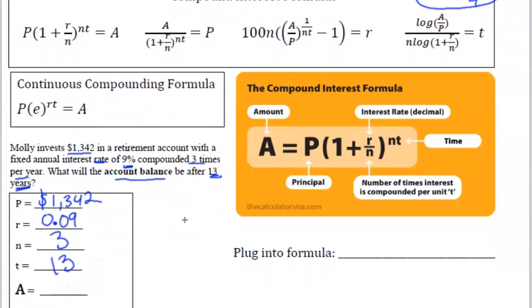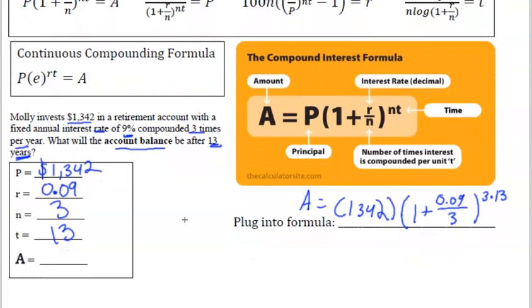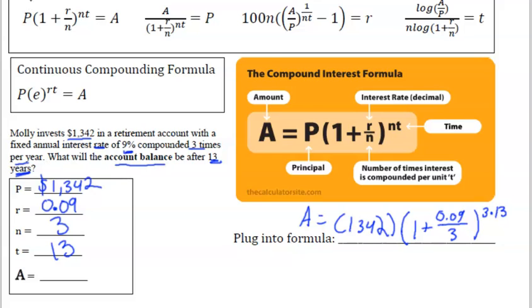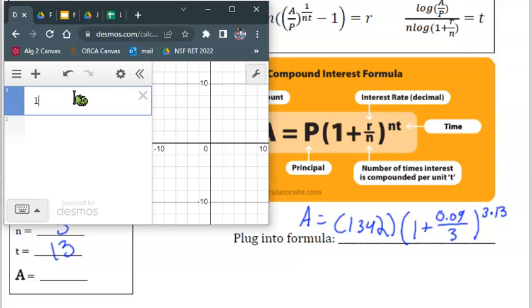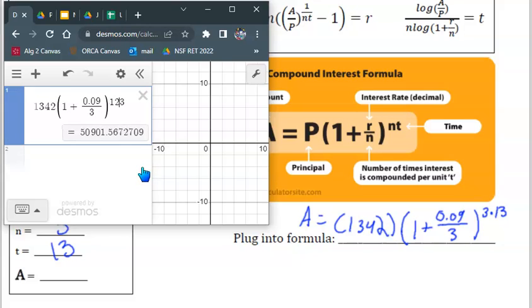So we have 1,342 and then 1 plus 0.09 over 3 to the 3 times 13 power, and that's what A is going to equal. So from there you just plug it into a calculator. And to get the exponent you press the caret button, it's that upside down V. And we get about $4,250.15.